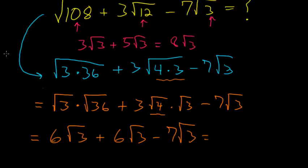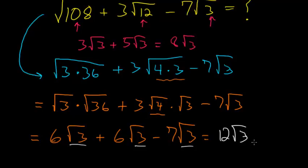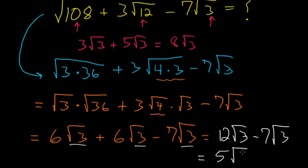Now since each of these square roots is the same, we can just add or subtract their coefficients. We have 6 root 3 plus 6 root 3, which gives 12 root 3, and then minus 7 root 3. Since 12 minus 7 is 5, our final answer is 5 times the square root of 3.